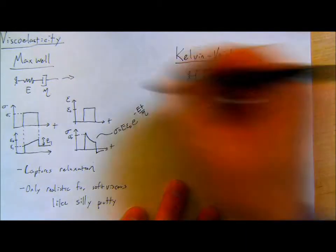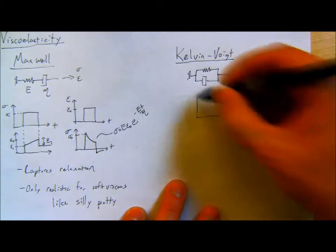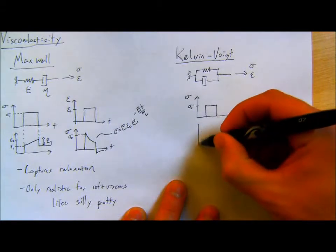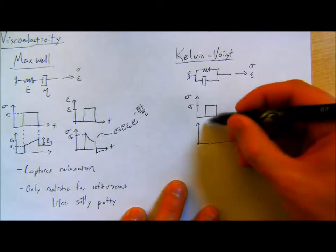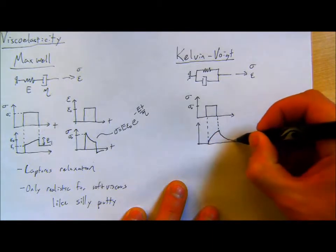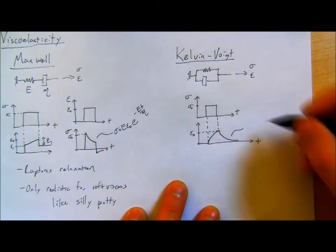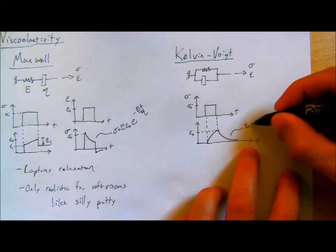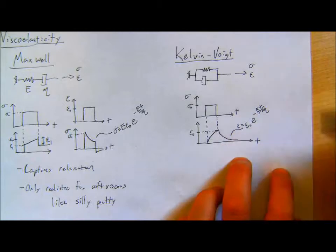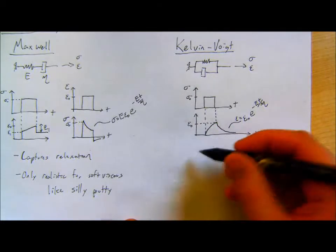For the Kelvin-Voigt model under a step stress sigma-naught, the strain response gradually increases over time and then decays back down — an exponential response. The strain equals epsilon-naught * e^(-E*t/eta). This is again an exponential, but now it's strain, and this captures the creep phenomenon.